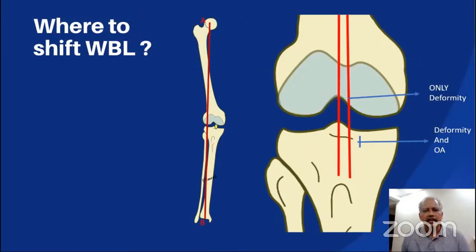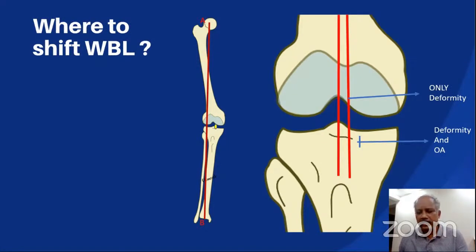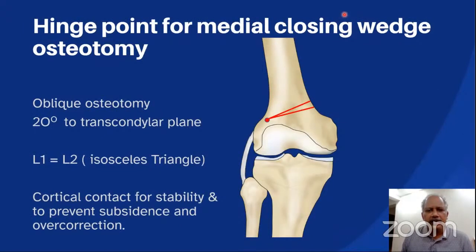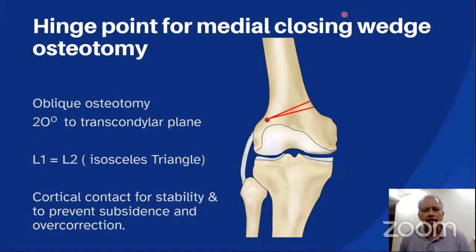Any distance measured in the x-ray multiplied by this magnification number corresponds to the real-life measurement. In a valgus knee without arthritis, the weight-bearing line is shifted to the center of the knee; in cases of lateral joint osteoarthritis, a slight varus of 2 to 3 degrees is aimed. For a medial closing wedge osteotomy in a valgus knee, the hinge point is 1 centimeter medial to the lateral epicondyle on the lateral aspect. The osteotomy lines are made obliquely at around 20 degrees so that both lines are equal in length and form an isosceles triangle.